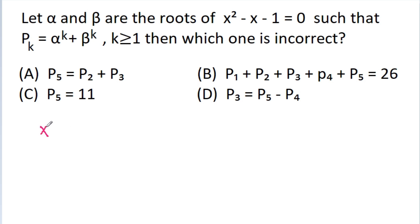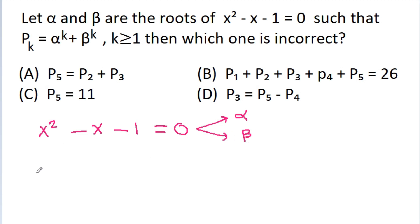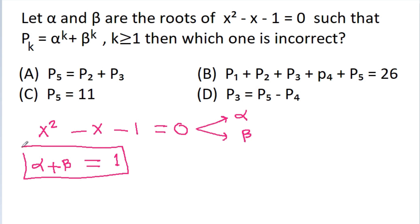The given equation is x squared minus x minus 1 equals 0, and the roots of this equation are alpha and beta. So the sum of roots, alpha plus beta, equals minus b over a, and since b is minus 1, it equals plus 1. And the product of roots, alpha times beta, equals c over a, and since c is minus 1, it equals minus 1.